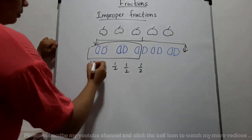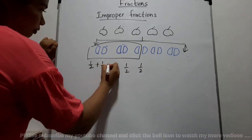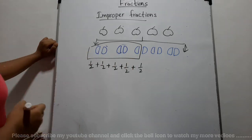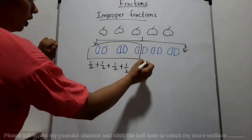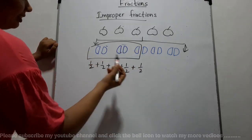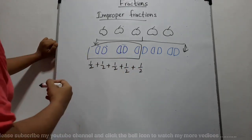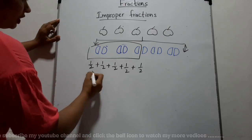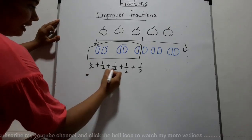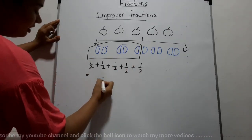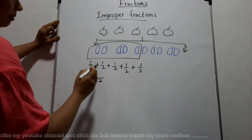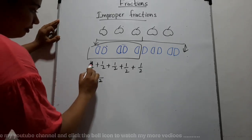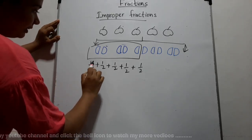Each person gets five halves. In grade 6 you have learned how to add fractions with equal denominators. Adding those five halves, the denominator is two and we add only the numerators, giving us five over two.